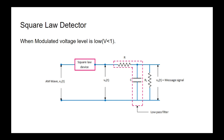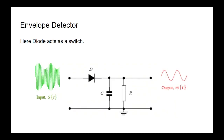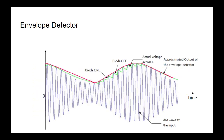The next method is the envelope detector. In this method the diode works as a switch. We apply the modulated signal at the input of the diode and the output is passed through a CR filter. When the diode is on the capacitor gets charged, and when the diode is off the capacitor gets discharged through the resistor. The output of this circuit depends on the charging and discharging of the capacitor.